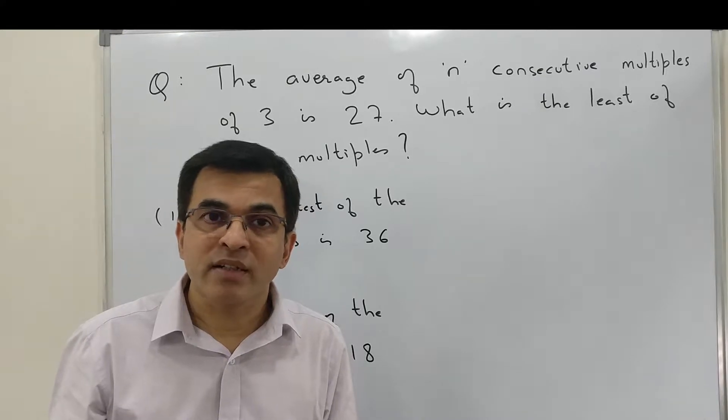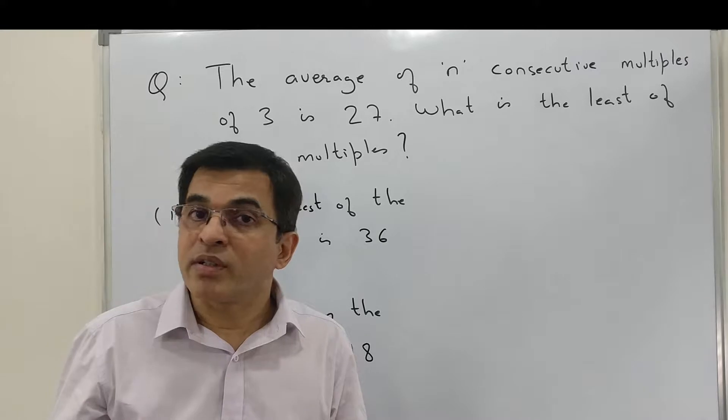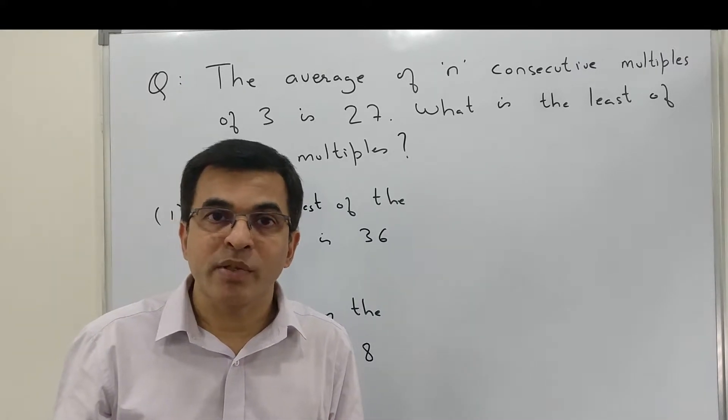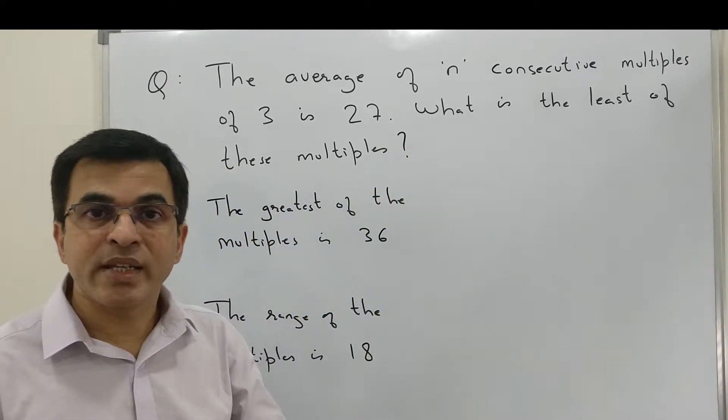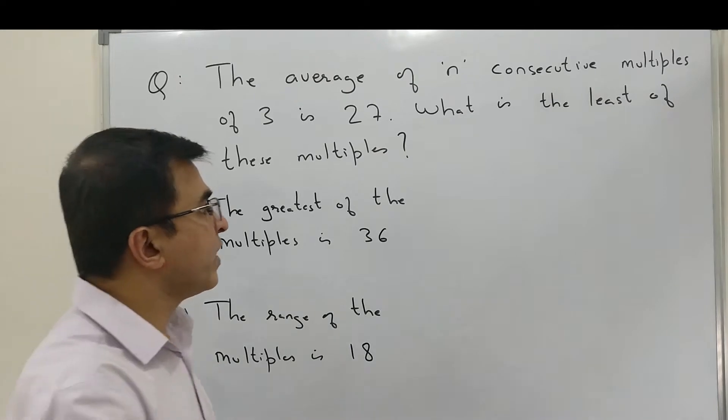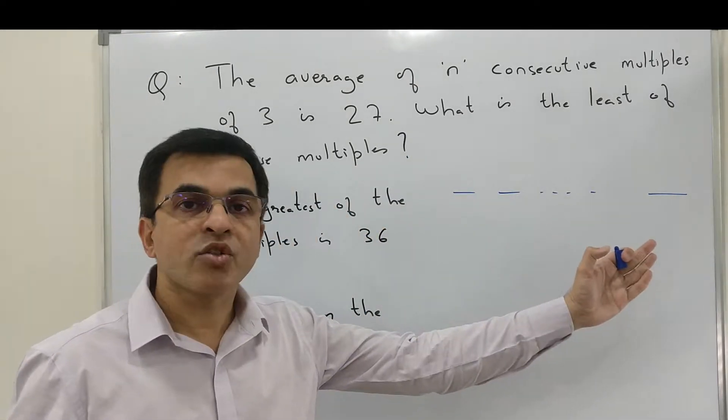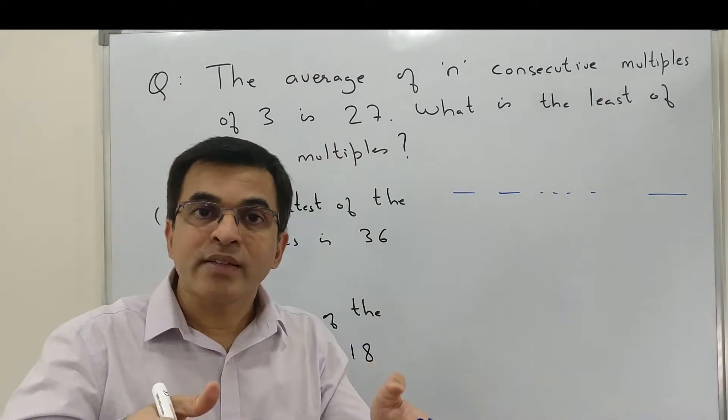The moment we pick up the connection of a question with the concept of arithmetic progression, we usually have very quick solutions available. Out here, the moment we see that we are talking of such a sequence, the first thing we know is that in the sequence - obviously we are assuming it's arranged in ascending order - the average which is given to us is right in the middle, because that's one of the basic properties of every arithmetic progression: the average is nothing but the middle term.